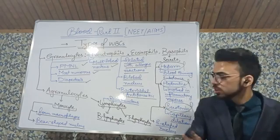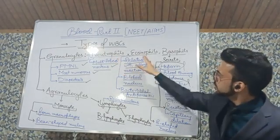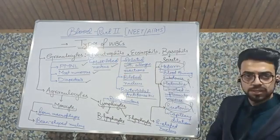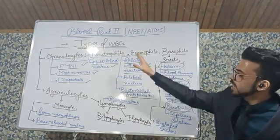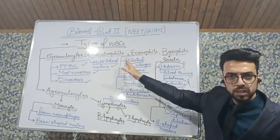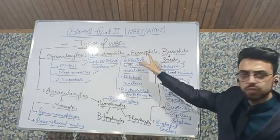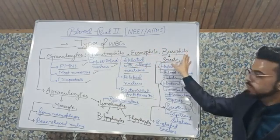So when we talk about these three types of granulocytes — neutrophil, eosinophil, and basophil — each has distinct nuclear morphology and functions as we have discussed.